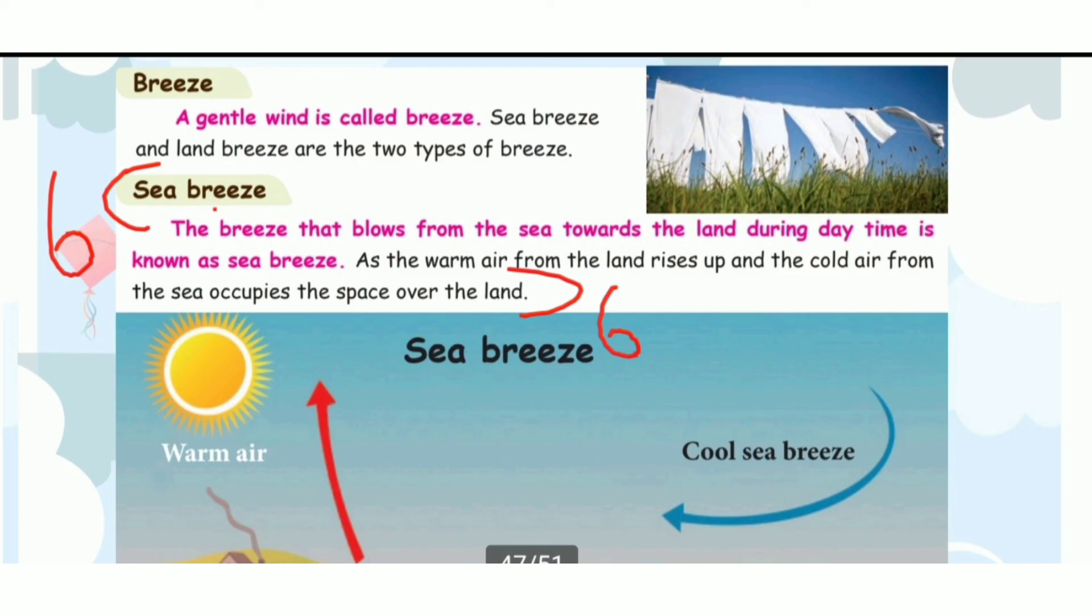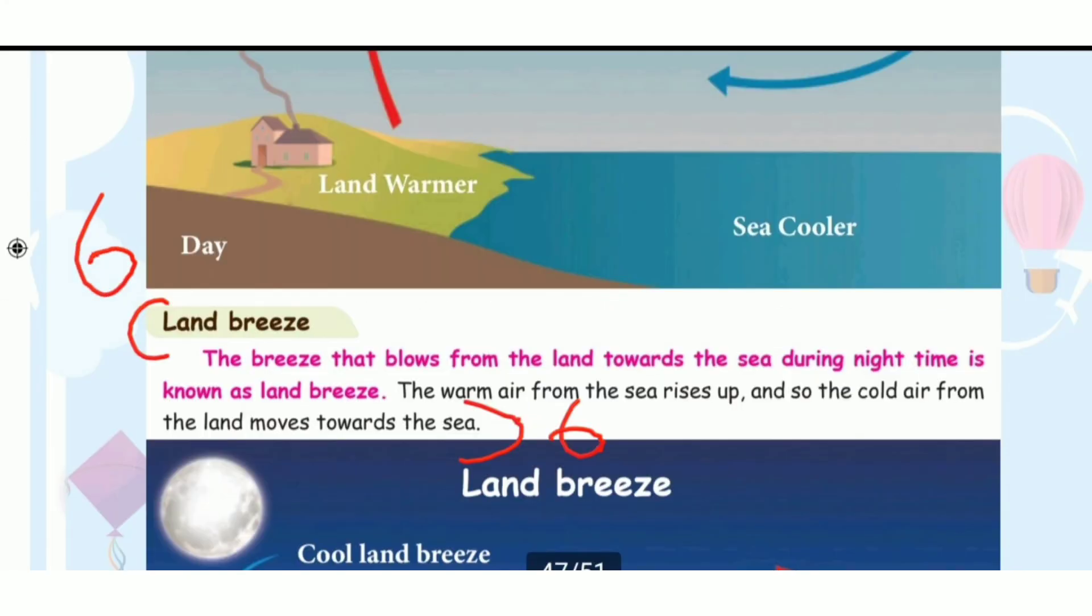Then land breeze: The breeze that flows from the land towards the sea during nighttime is known as land breeze. The warm air from the sea rises up, and so the cold air from the land moves towards the sea.